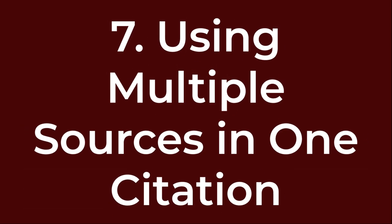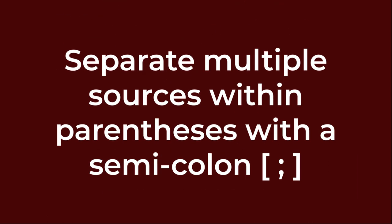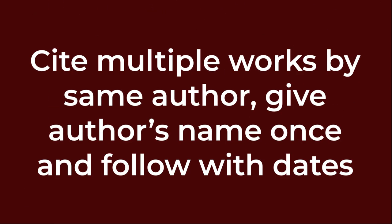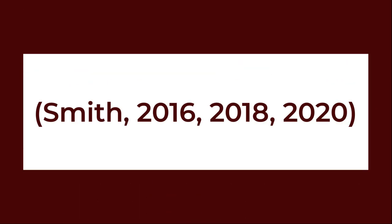Number seven: using multiple sources in one citation. To cite multiple sources in the same parenthetical reference, separate the citations within the parentheses by a semicolon. Order them the same way they appear in the reference list, which would be alphabetically. For example: (Burke, 2011; Dewey, 2021). If you cite multiple works by the same author in the same parenthetical citation, give the author's name only once and follow with dates. For example: (Smith, 2016, 2018, 2020).